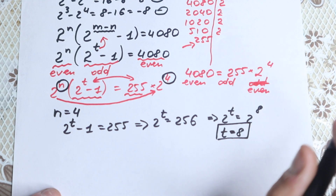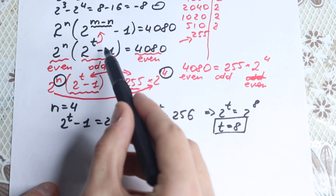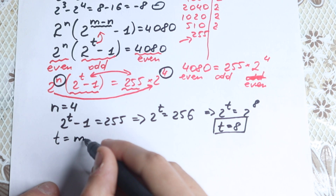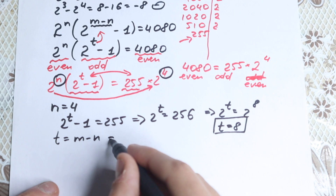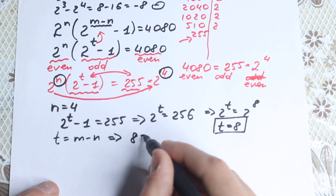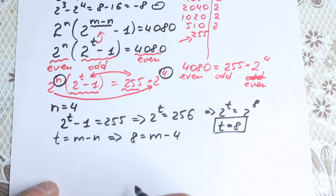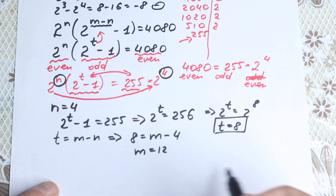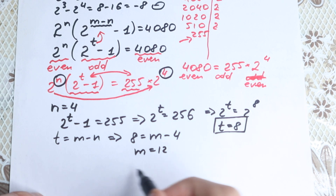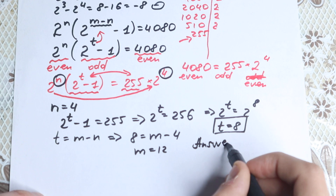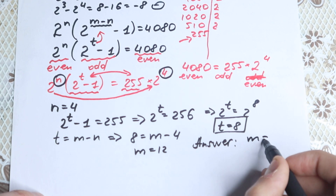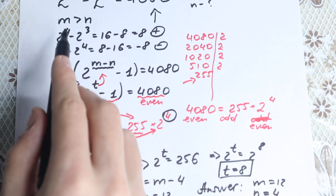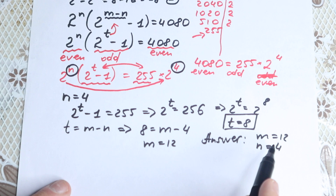Now for the solution: t equals 8, and we had the substitution t equals m minus n. We know n equals 4, so 8 equals m minus 4, which gives m equals 12. Our answer is m equals 12 and n equals 4. As we established, m is greater than n, and indeed 12 is greater than 4.